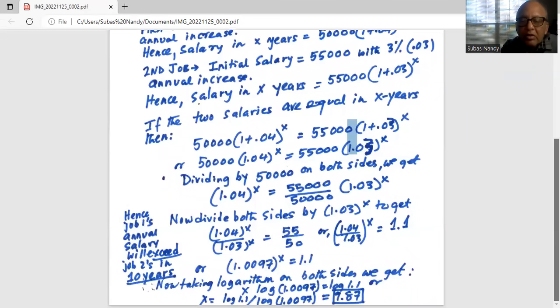Now we take logarithm on both sides. We get X because we're using the rules of logarithm - when you have an exponent it gets multiplied. So X times logarithm of 1.0097 equals logarithm of 1.1.